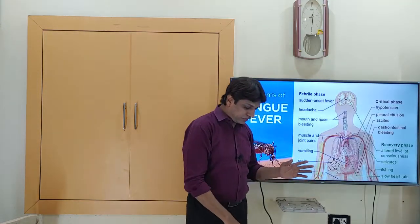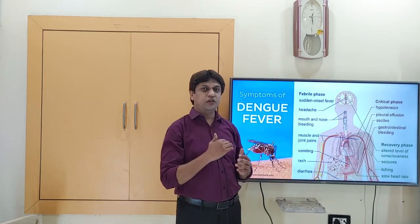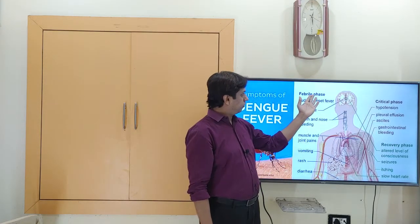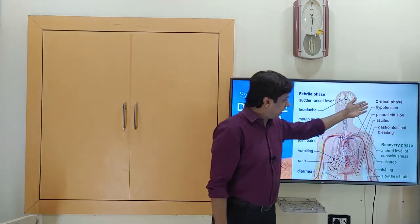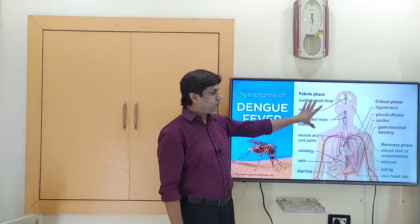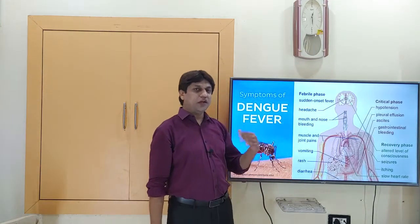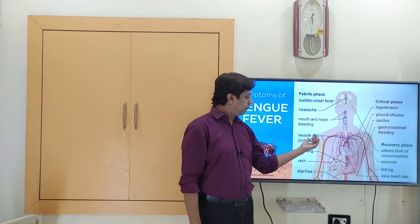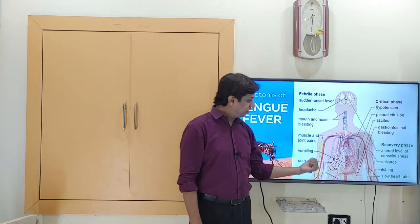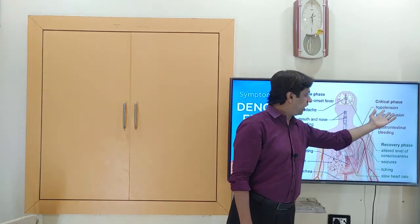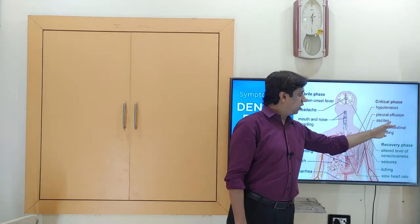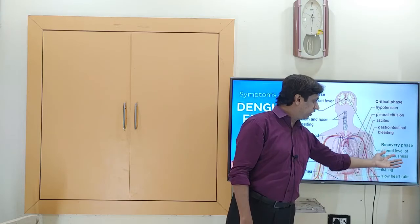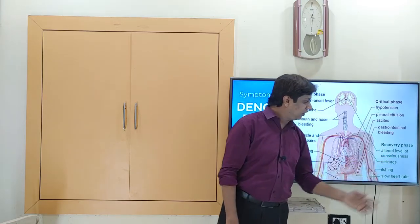Nowadays, instead of classifying as Dengue fever, Dengue hemorrhagic fever, and Dengue shock syndrome, the disease is classified based on three phases: febrile phase, critical phase, and recovery phase. In the febrile phase, there is sudden onset of fever, headache, mouth and nose bleeding, muscle and joint pain, vomiting, rash, and diarrhea. In the critical phase, hypotension, pleural effusion, ascites, gastrointestinal bleeding, and shock syndrome features are seen. In the recovery phase, altered level of consciousness, seizures, itching, and slow heart rate are observed.